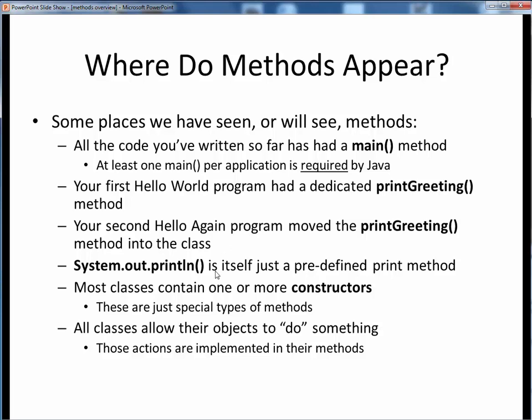Whenever we wanted to display some text to the screen, we've relied upon the System.out.println method, which is itself just a standard predefined system method. As we'll see soon, most Java classes contain one or more constructors, which are just special methods used to create new objects. All classes allow their objects to do certain things, and those actions are implemented by the methods of that class.